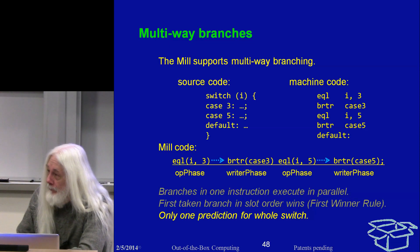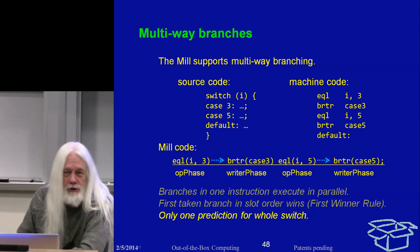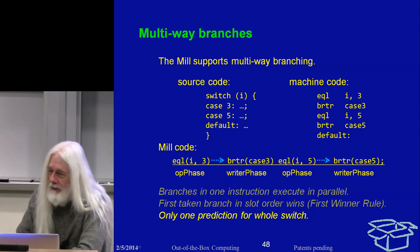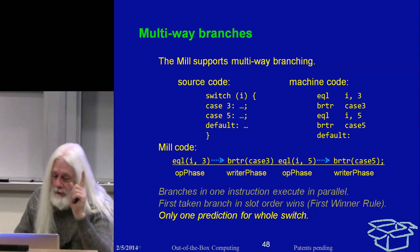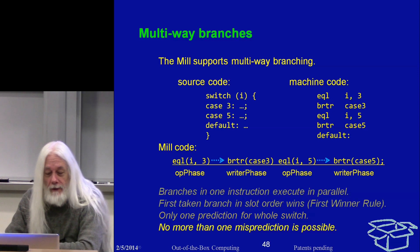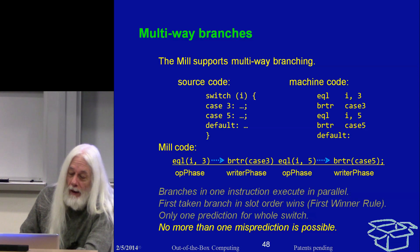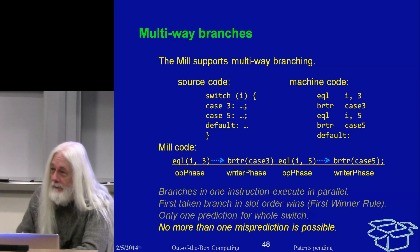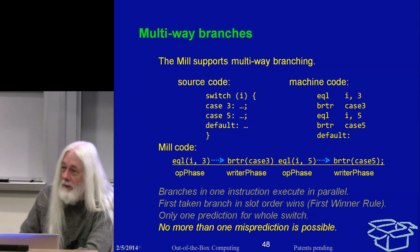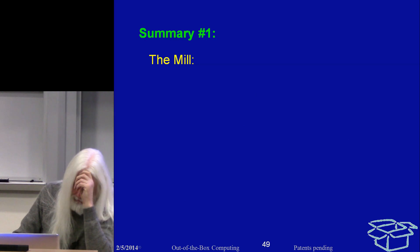There is only one prediction for the whole switch. The Mill predicts exits rather than branches — that has been covered thoroughly in a talk called 'prediction' in your homework assignment. No more than one mispredict is possible. By the time we come back having discovered we were wrong, we have the correct value and will take the correct branch.